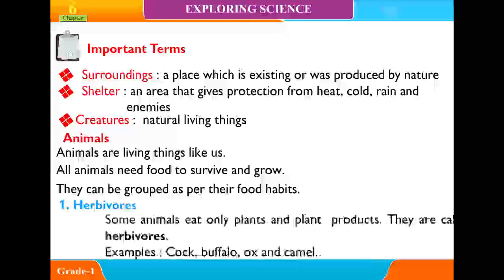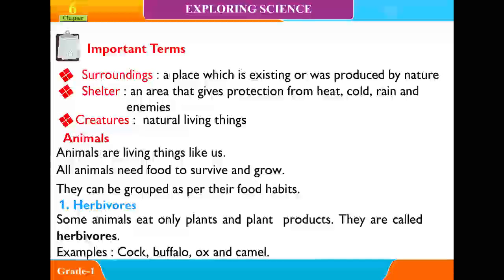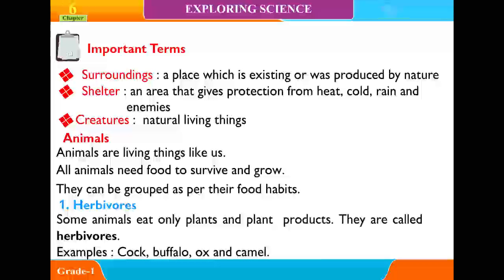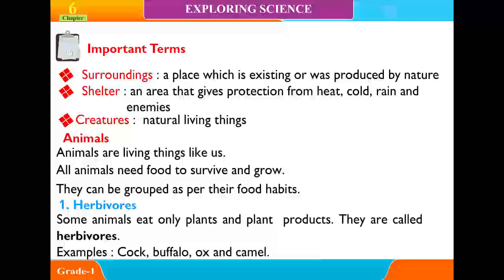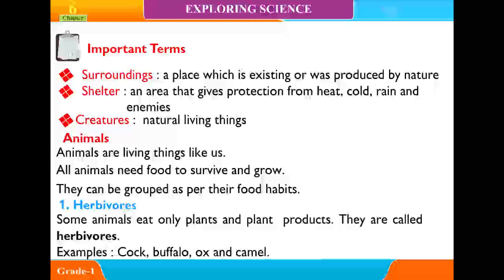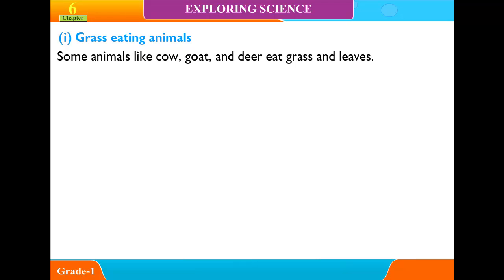Herbivores: Some animals eat only plants and plant products. They are called herbivores. Examples include cock, buffalo, ox and camel. Some animals like cow, goat and deer eat grass and leaves.